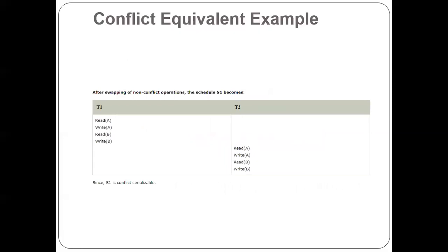After swapping non-conflicting operations, the serial schedule S1 becomes: T1 reads A, writes A, reads B, writes B; then T2 reads A, writes A, reads B, writes B. Since S1 satisfies the conditions of conflict serializability, it is conflict serializable. Thanks for watching.